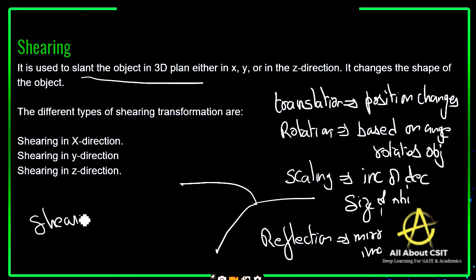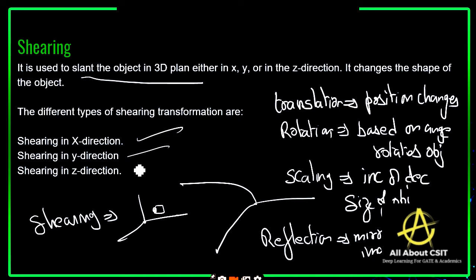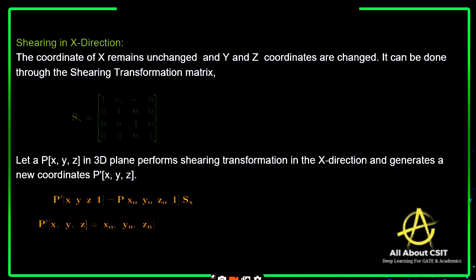Shearing slightly changes — it does not increase or decrease the size, and it does not change the position. The object remains in the XYZ plane where it is; it simply slides or slants the object, like laying it down or up. It slants the object in a 3D plane either in X direction, Y direction, or Z direction. These are the different types of shearing transformations.